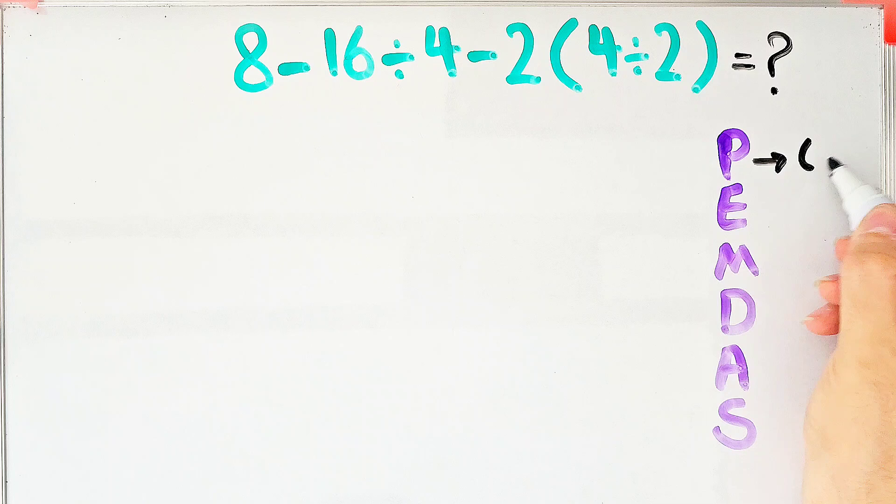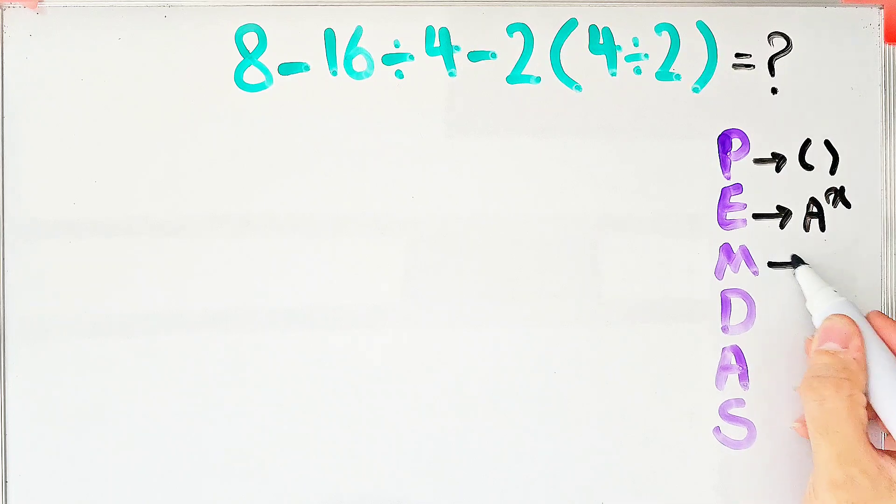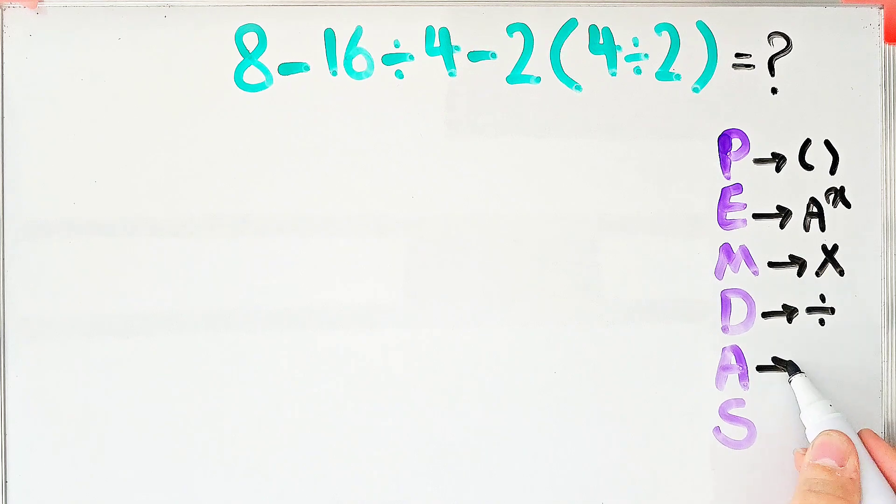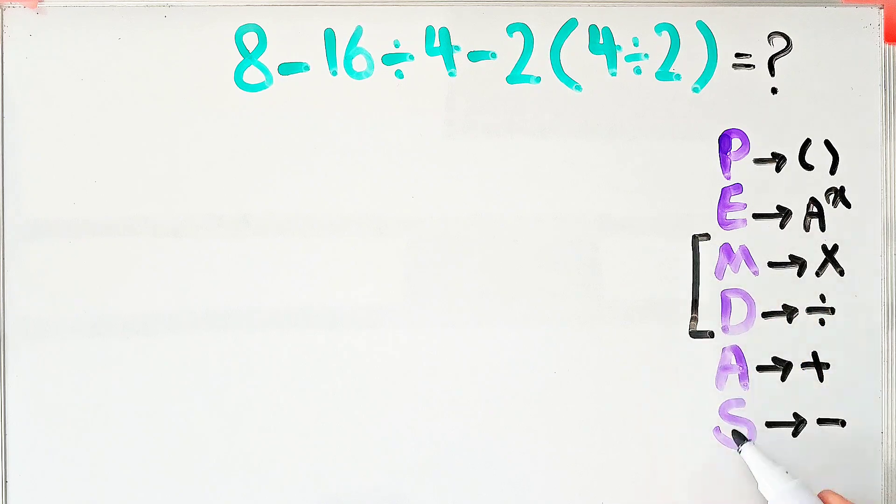P stands for parentheses, E stands for exponent, M stands for multiplication, D stands for division, A stands for addition and S stands for subtraction. Multiplication and division have the same level of priority, also addition and subtraction have the same priority.